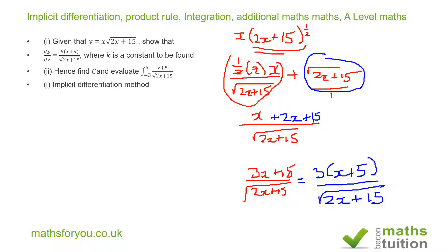Now let's do the same problem using implicit differentiation. Let's copy this down: y equals x into the square root of 2x plus 15. If we square both sides, we get y squared equals x squared times 2x plus 15, because squaring the square root of 2x plus 15 just gives 2x plus 15.